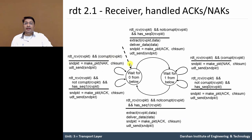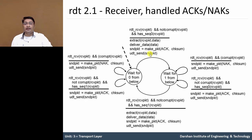On the receiving side, the initial state waits for a packet from the lower layer. If a packet is received, not corrupted, and has proper sequence number 0, it extracts the data from the packet and delivers it to the upper layer using the deliver data function. It then creates an acknowledgement packet with a checksum value — note that we add a checksum field to the acknowledgement instead of the data packet for error recovery — and sends the packet to the sender. If the received packet is corrupted, a negative acknowledgement packet with checksum value is created and sent to the sender.